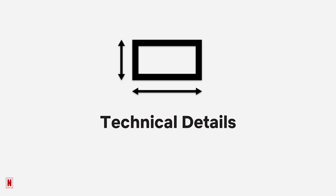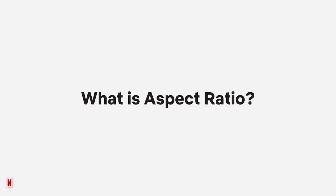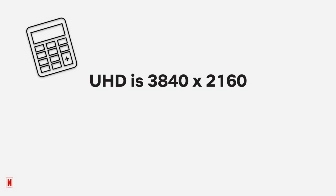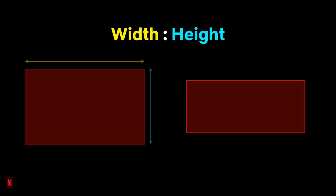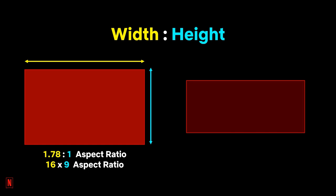Let's shift our focus to the more technical details about aspect ratios. What is aspect ratio? It's just math, and it's not the scary kind. The pixel resolution of UHD is 3840 by 2160. So if we divide 3840 by 2160, this equals 1.78, and that is our aspect ratio based on the pixel resolution. The 1.78 to 1 aspect ratio, also referred to as 16 by 9, quite literally means that it is 1.78 times wider than the height. On the right, the area within the red box is an example of a wider aspect ratio that is 2.39 times wider than the height, with the gray box representing how it would fit on a typical 1.78 TV.